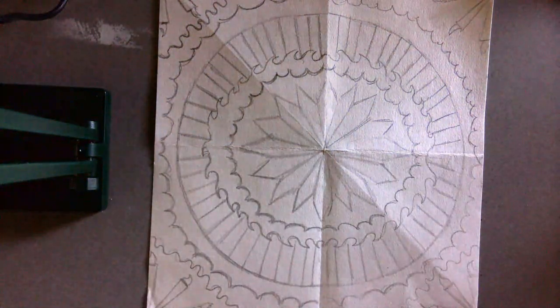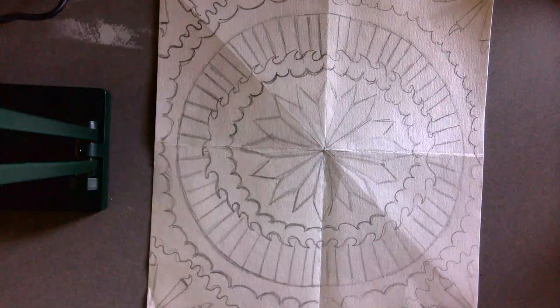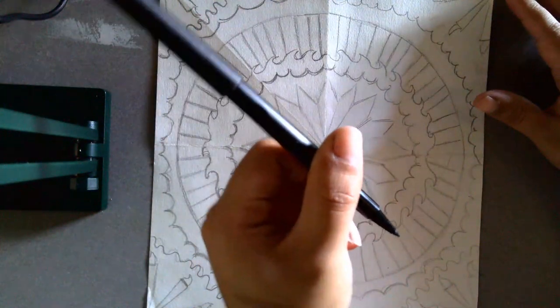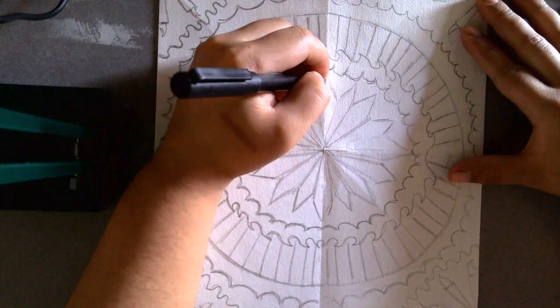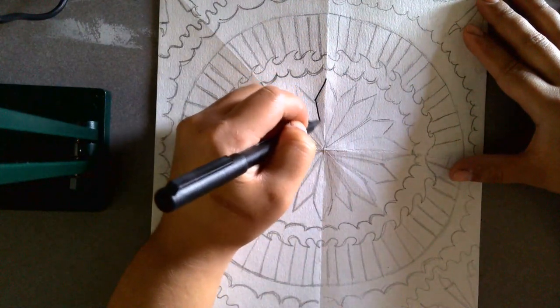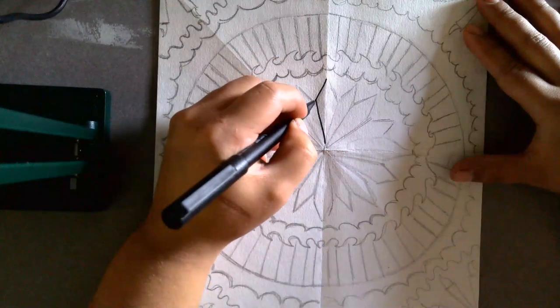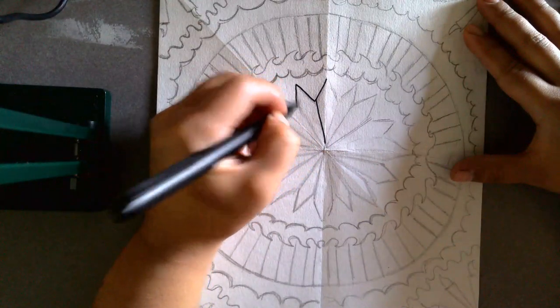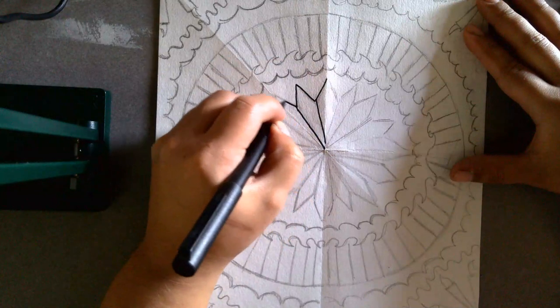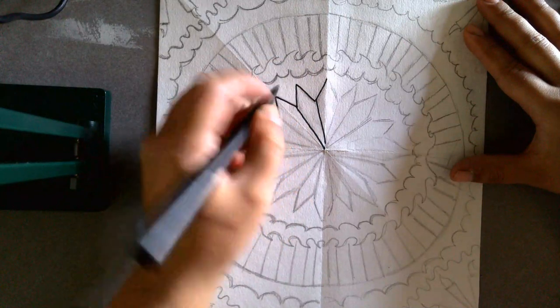Today we are going to outline and color our design. So I'm using a black marker, you can use a pen, but I recommend a marker because it's thicker and I'm just going to go over my design so I can make sure these lines are nice and crisp and that way I can also see where exactly I'm going to be coloring.